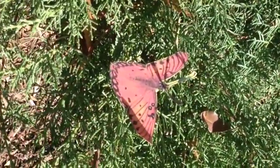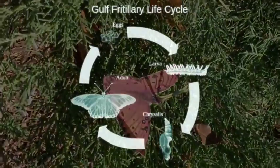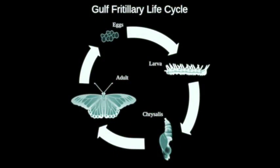Today you will learn about the life cycle — this is the butterfly life cycle. First it starts with the egg, which is at the top of the cycle. Then after the egg hatches, it hatches into a larva, which is a caterpillar. The next stage is a chrysalis, or the cocoon, and then the adult butterfly.